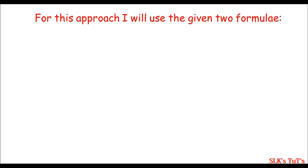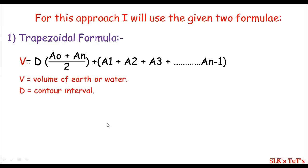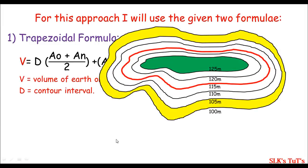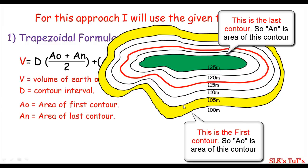For this approach I'll use two formulas: the trapezoidal formula and the prismoidal formula. In the trapezoidal formula, V represents the volume of earth or water, and D represents the contour interval — that is, the vertical distance between two contour lines. In this map you can see 100, 105, 110 — there is a difference of 5 meters in elevation between contour lines, so the contour interval is 5 meters. A' represents the area of the first contour and A_n represents the area of the last contour.